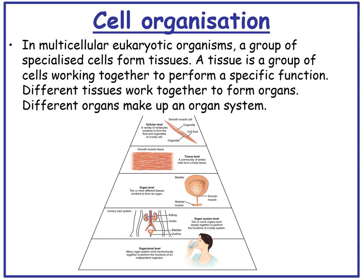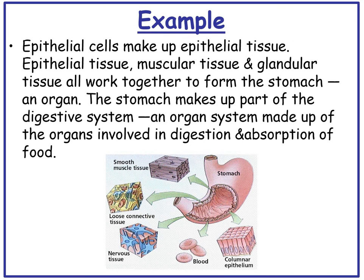Looking at cell organisation: in multicellular eukaryotic organisms, a group of specialised cells forms a tissue — a group of cells working together to perform a specific function. Different tissues work together to form organs, and different organs make up an organ system. For example, epithelial cells make up epithelial tissue. Epithelial tissue, muscular tissue, and glandular tissue all work together to form the stomach, which is an organ. The stomach makes up part of the digestive system, which is an organ system made up of the organs involved in digestion and absorption of food.